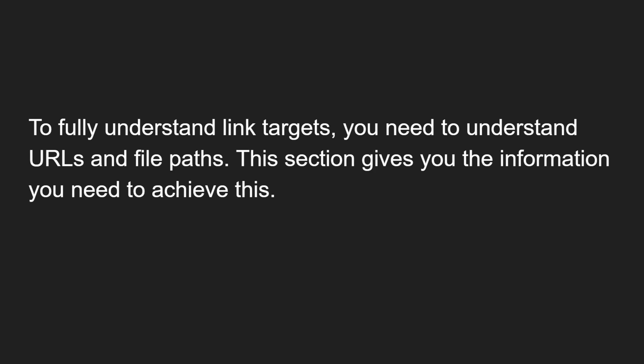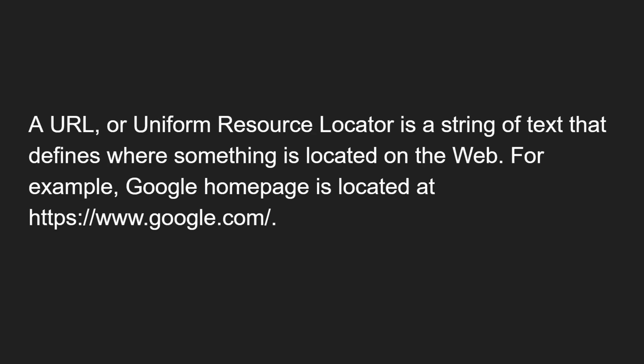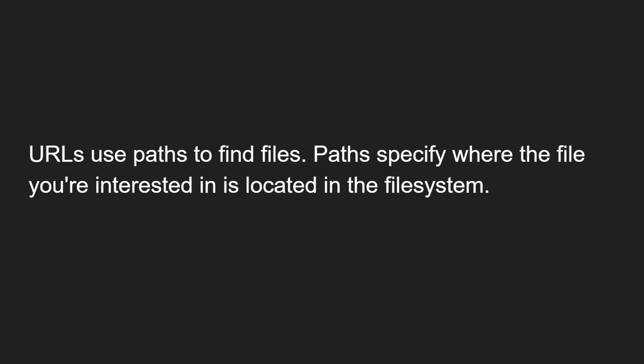To fully understand the link targets — link targets means the href attribute, sometimes we call it the target — you need to understand URLs and file paths. A URL: the full form is Uniform Resource Locator. A URL is a string of text that defines where something is located on the web. For example, the Google homepage is located at www.google.com. The URL uses paths to find files. Paths specify where the file you are interested in is located in the file system.